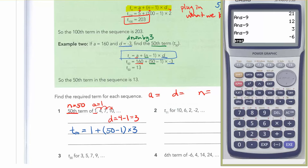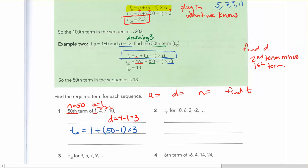And if you plug this into your calculator, 1 plus bracket, 50 minus 1 bracket, times 3, you get 148. So the 50th term is equal to 148.